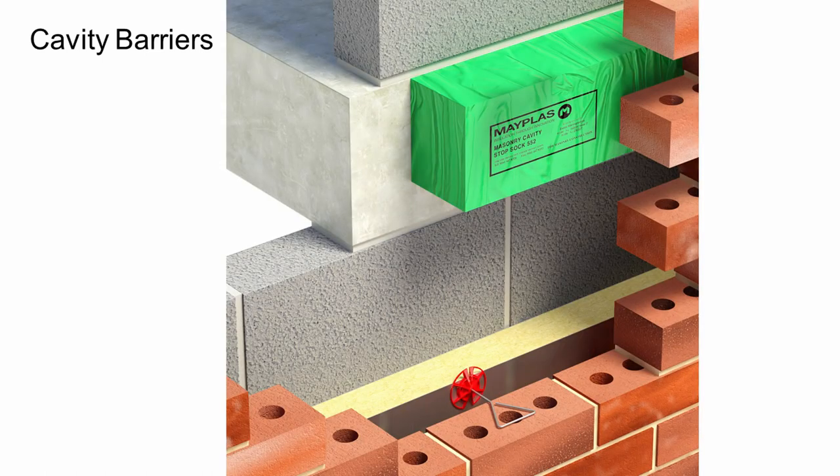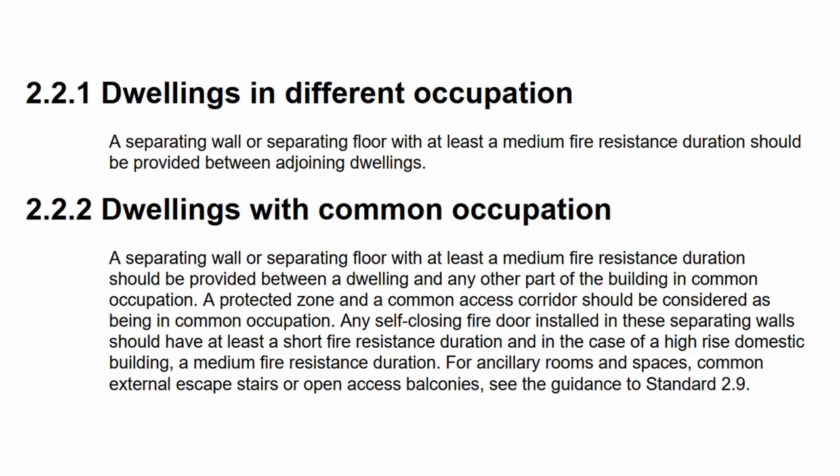We also need to install cavity barriers horizontally within buildings — not only at certain distances along the wall, but also at certain heights, such as between different floors and different flats. Where buildings have different or common occupation, there are different rules. What we're really looking at is a separating wall or separating floor between different parts of a building. Where a wall needs to be of medium fire resistance duration and there's a cavity running alongside it, we need to close that cavity at that point with a cavity barrier to maintain a consistent firewall.